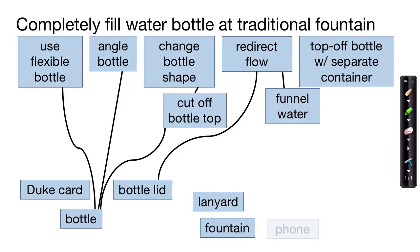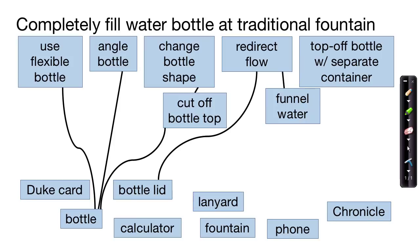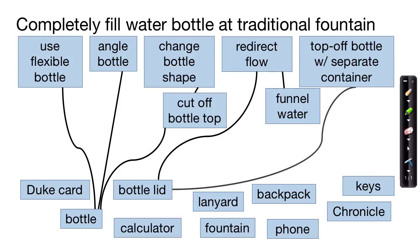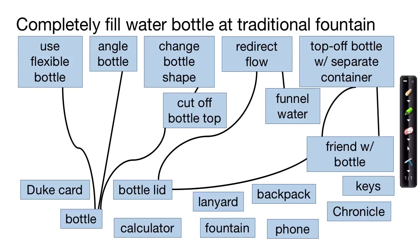We have a lanyard. Most students using the water fountain would have a phone. They might carry a calculator. Maybe they've picked up a paper copy of the school paper. Most students carry a backpack. We also have keys for a car, room, or house. Someone watching the diagram take form might notice that topping off the bottle with a separate container could be done using the bottle lid, or maybe using a friend and their water bottle. We could funnel the water using the school paper, and we could redirect the flow using a lanyard or a string with keys on them.